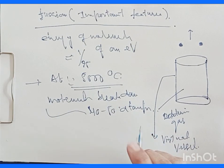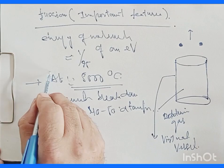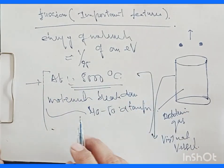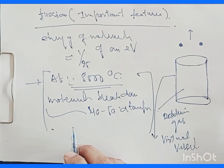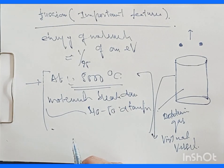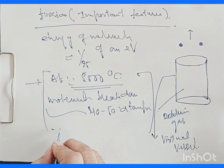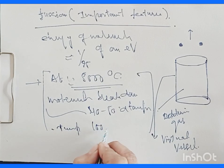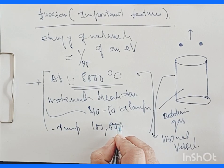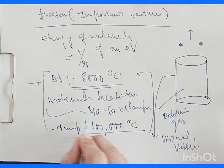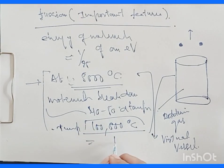Even at this temperature — 5,000°C — we don't have enough velocities of the atoms; they are not sufficient to cause nuclear fusion. Now let the temperature go to 100,000 degrees Celsius — a huge temperature of the order of 10⁵ degrees Celsius.